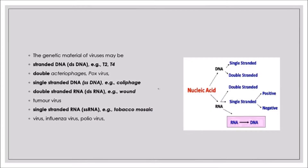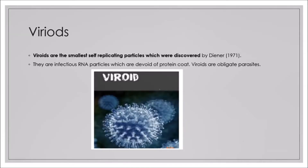Viroids are the smallest self-replicating particles — they do not need any help for replication. Described by Diener in 1971, viroids have very infectious RNA particles and do not have any protein coat. They are obligate parasites that live on living host cells.